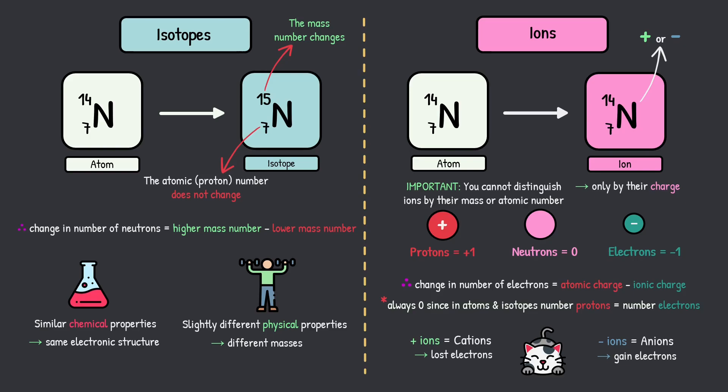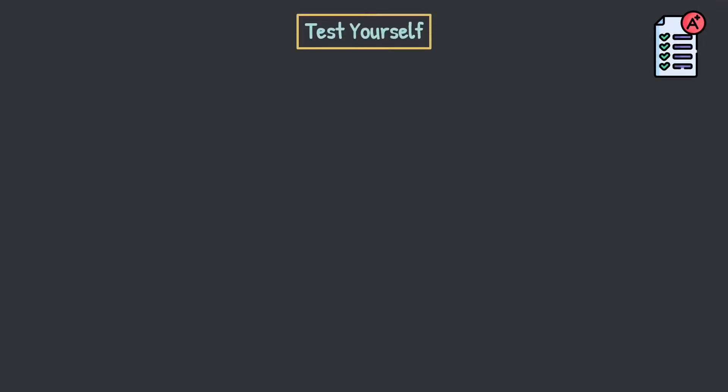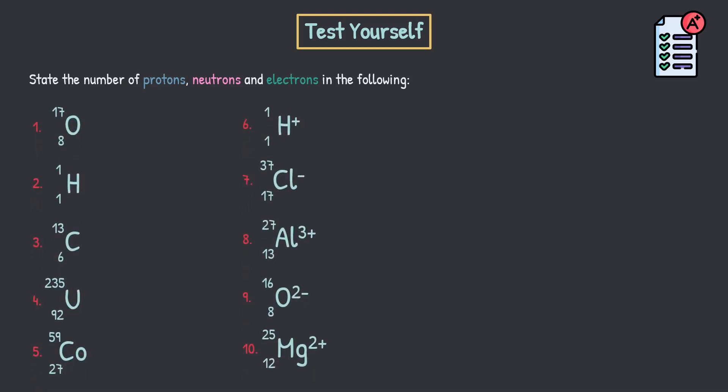So that's ions and isotopes — the theory wrapped up. Let's do some test yourself questions. I want you to state the number of protons, neutrons, and electrons in the following species. Get a piece of scrap paper out and attempt this yourself. If you're starting out with chemistry, really attempt these questions — it will help you out so much. Just a little bit of practice and you'll be good to go.